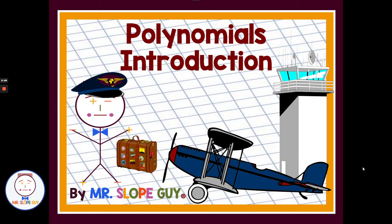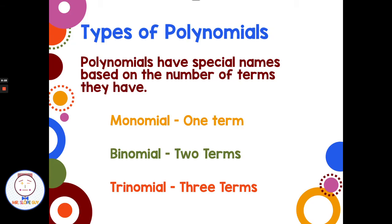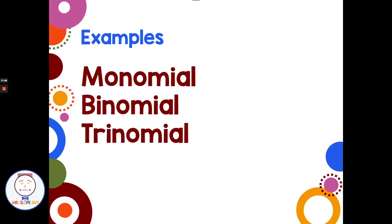Today we're going to talk about polynomials. A polynomial is a number, a variable, or a product of a number and a variable — like 4x. Polynomials have special names based on the number of terms. One term is a monomial, two terms is a binomial, and three terms is a trinomial — just like a tricycle has three wheels, a bicycle has two, and a monologue means one person speaking.